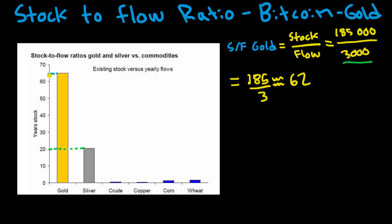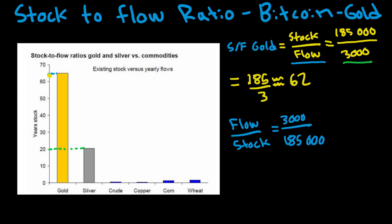Silver looks to be closer to 20 on the graph, meaning it would take around 20 years to produce the total available amount. Another way to look at this is to compare the flow to the stock instead. For gold, that would be 3,000 divided by 185,000, which equals around 1.6%. We can think of this as the gold stock increasing by about 1.6% every year.